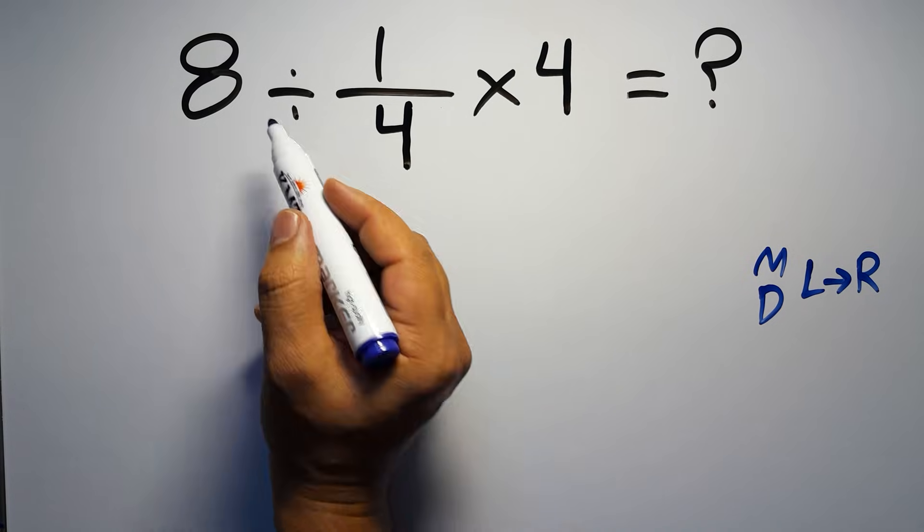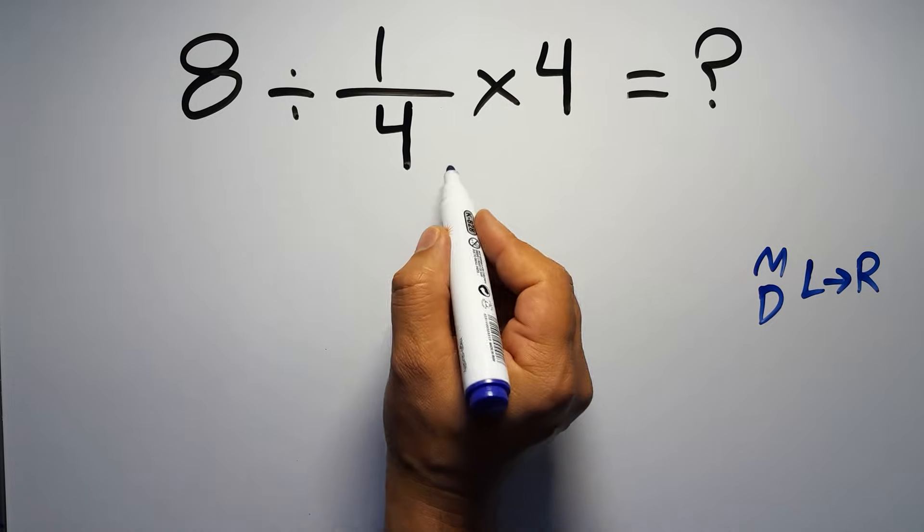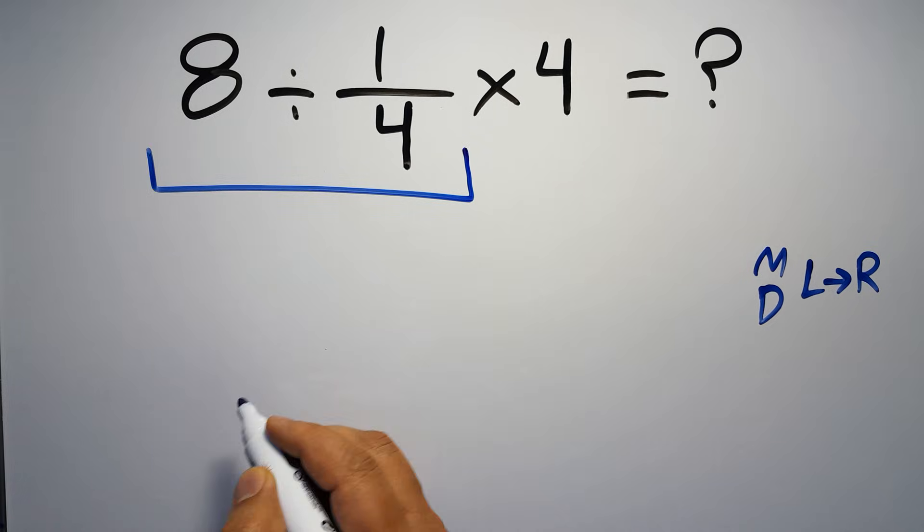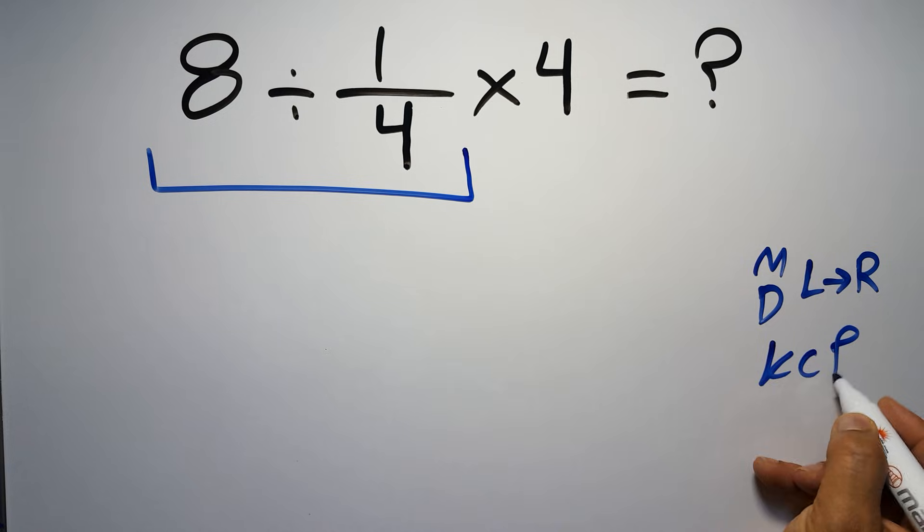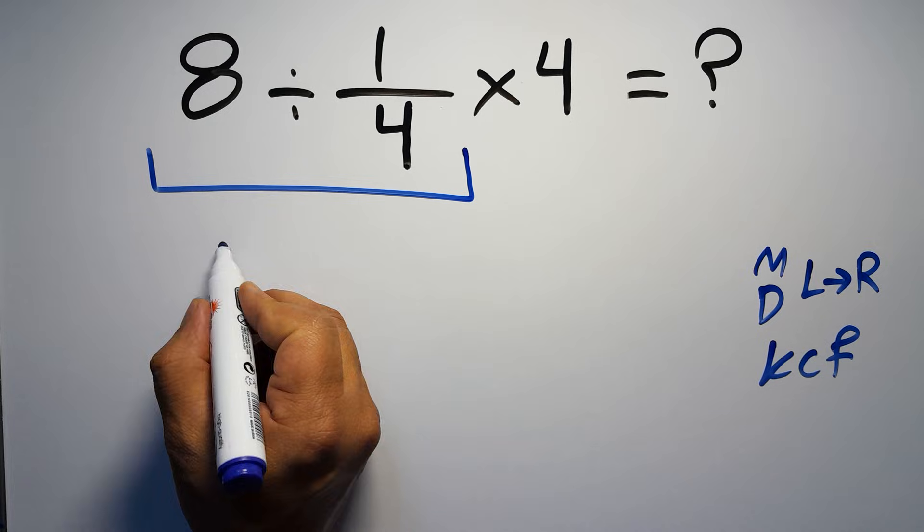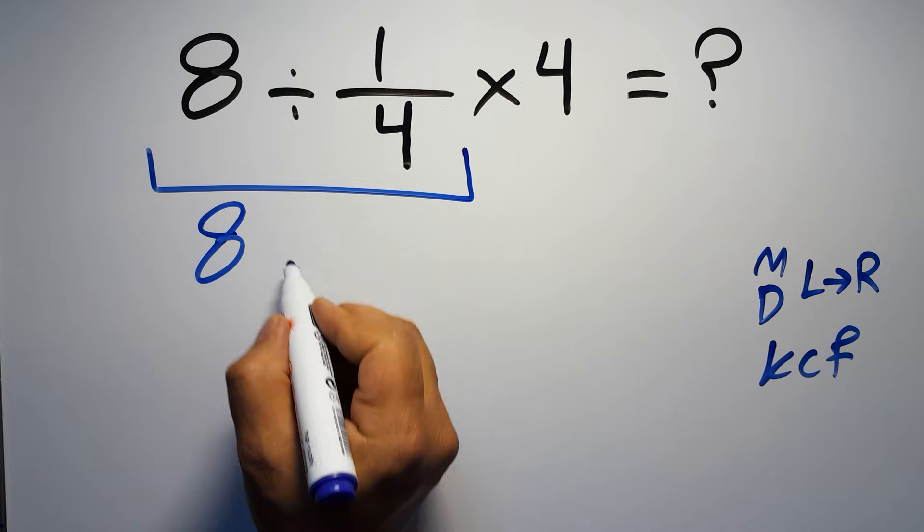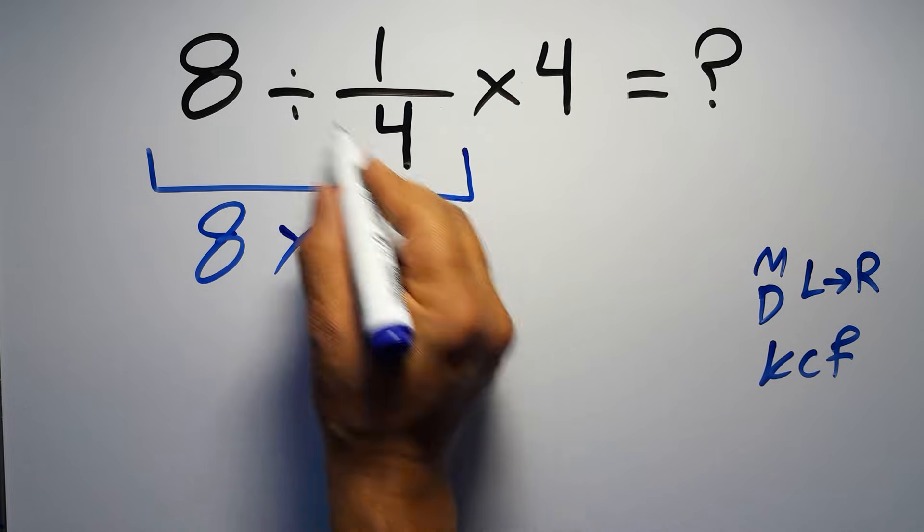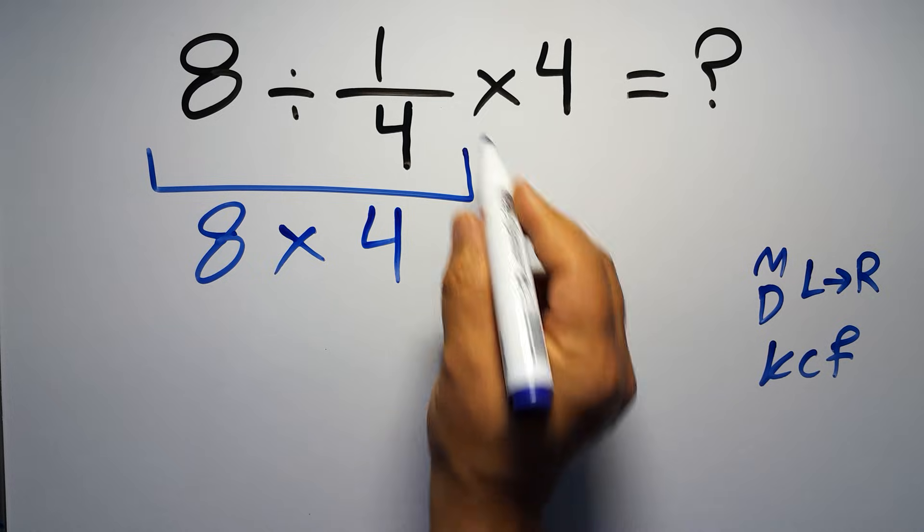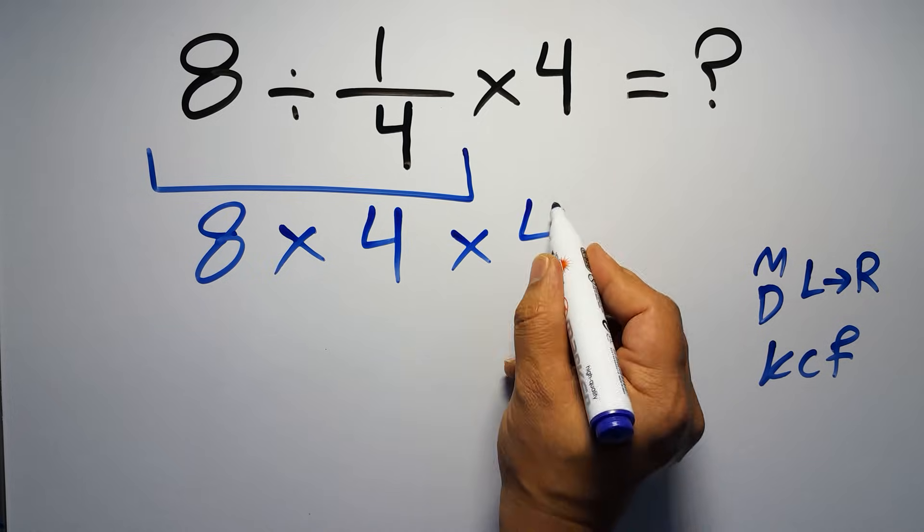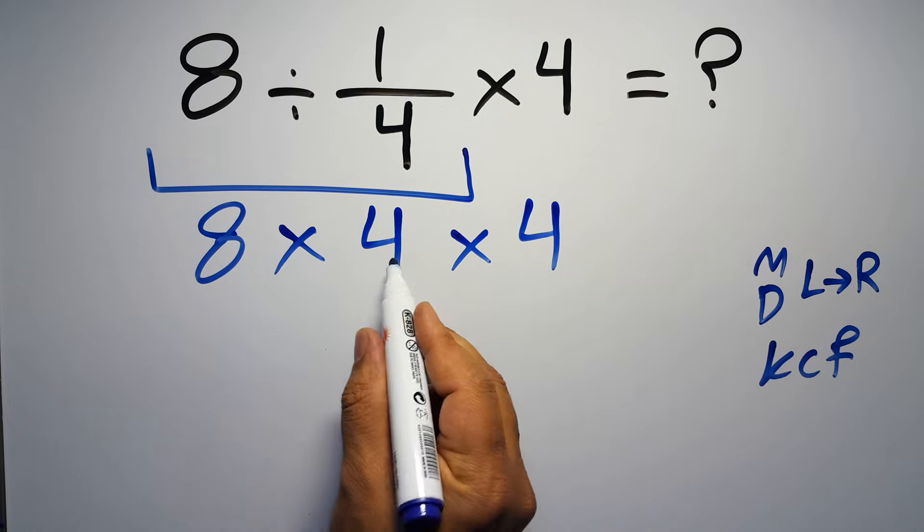First we have to do this division: 8 divided by 1 over 4. According to the KCF rule, K stands for keep, C stands for change, and F stands for flip. We can write keep the first fraction, change division to multiplication, and flip the second fraction. And again here we have times 4.